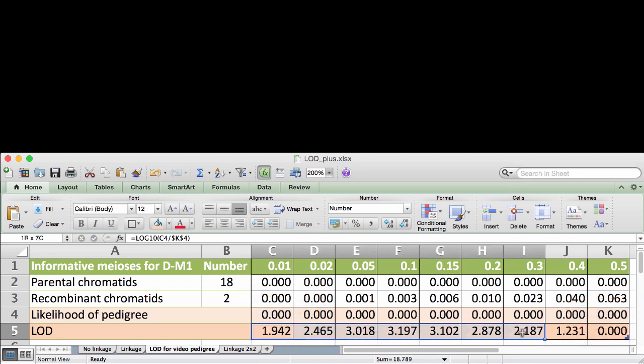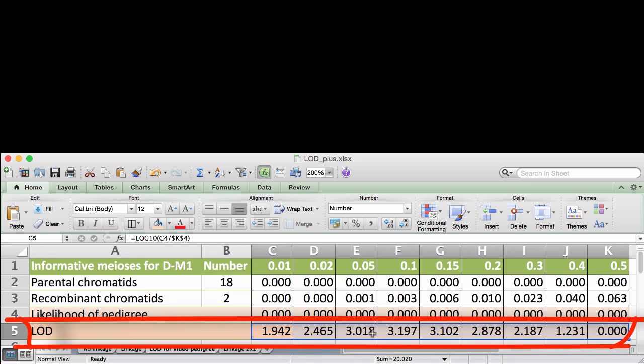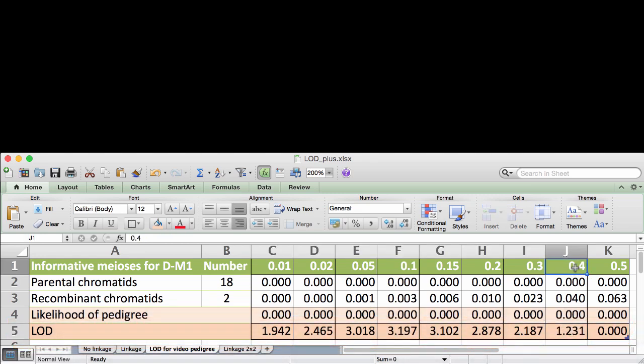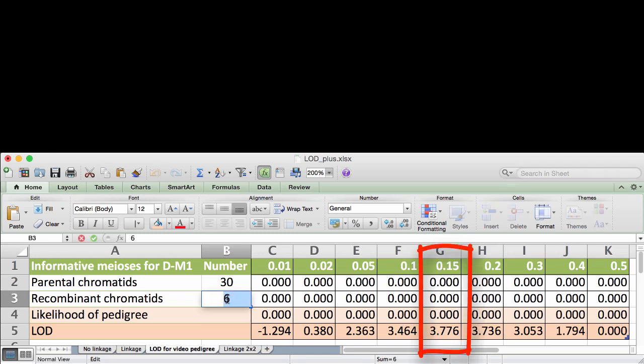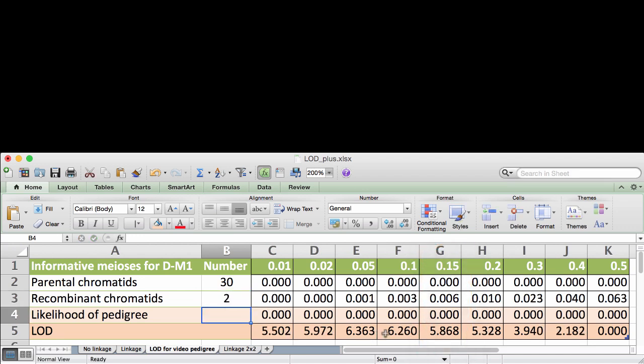The LOD score increases with the number of informative events. If, for example, I change my input to 30 and 6 parental and recombinant chromatids respectively, I get an LOD maximum at about 15 map units. For 30 and 2, I get a maximum at 5 map units. For 30 and 1, I get a maximum of 2 map units.